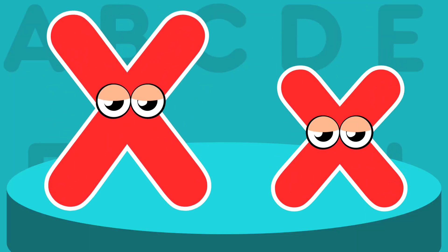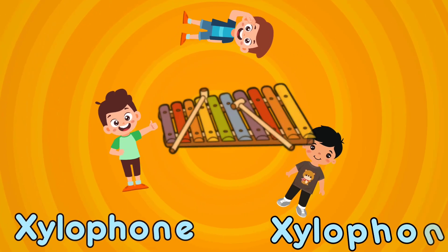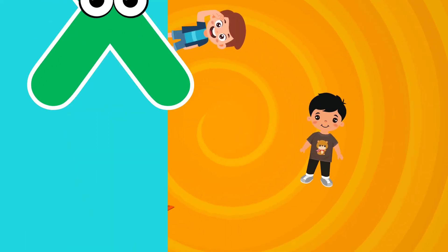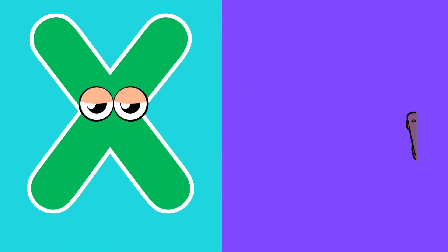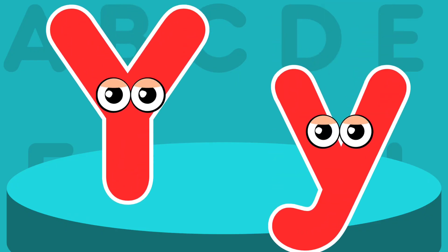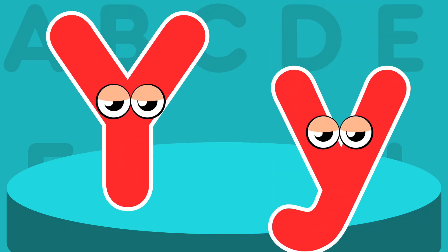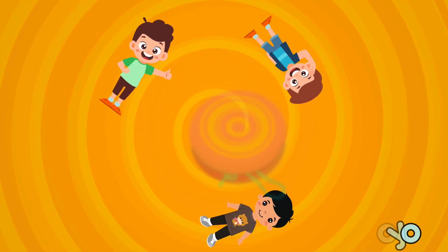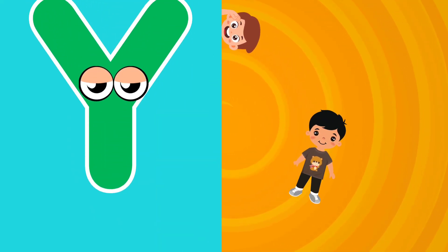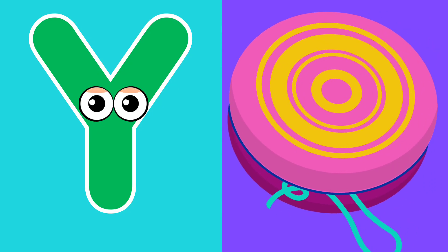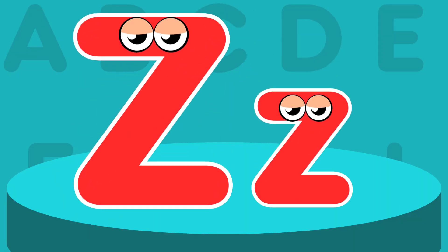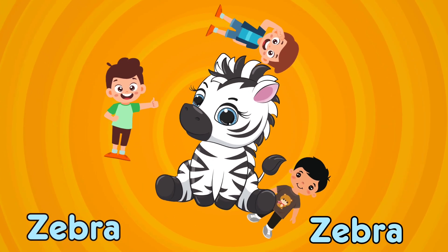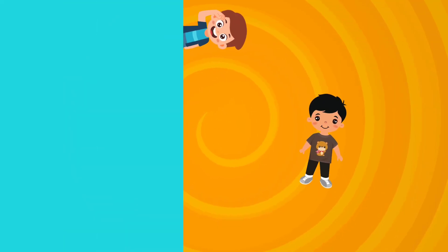X is for xylophone. X, xylophone, X, xylophone. Y is for yo-yo. Y, yo-yo, Y, yo-yo. Z is for zebra. Z, zebra, Z, zebra.